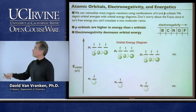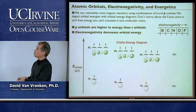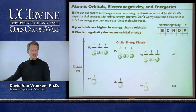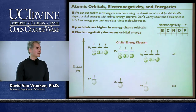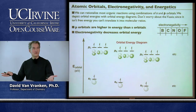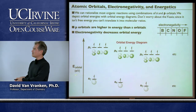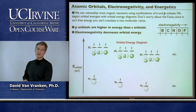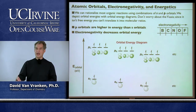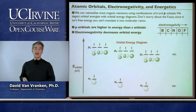Fact number one: p orbitals are higher in energy than s orbitals. This is a molecular orbital energy diagram with energies in electron volts—don't treat it like a reaction coordinate. The important thing is that p orbitals are higher in energy. If you're a pair of electrons in a p orbital, you are more reactive than a pair of electrons in an s orbital—a lot more reactive, not a little.